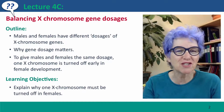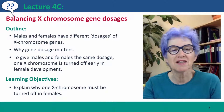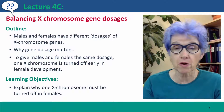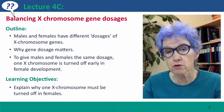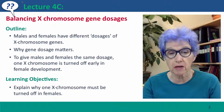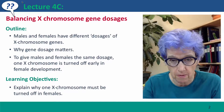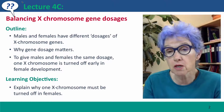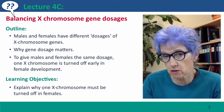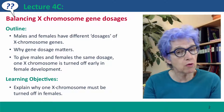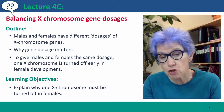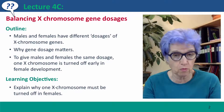Hi, everyone. Welcome back to Usual Genetics. This is lecture 4C, where we're going to talk about the problem of balancing the different doses of X chromosome genes in males and females. The problem arises because males have one X, females have two, and it turns out that the relative dosages of genes matters a lot for normal development.